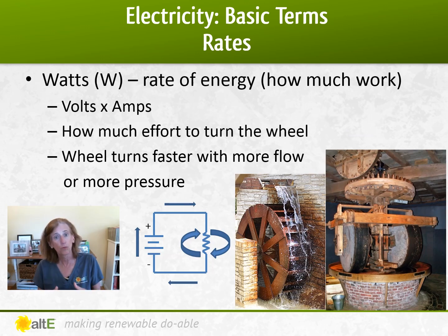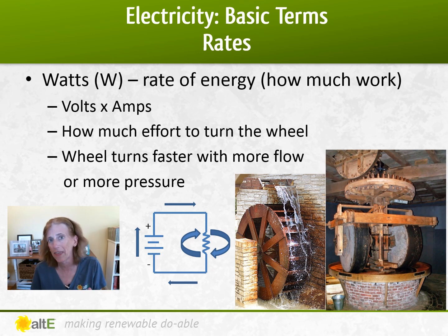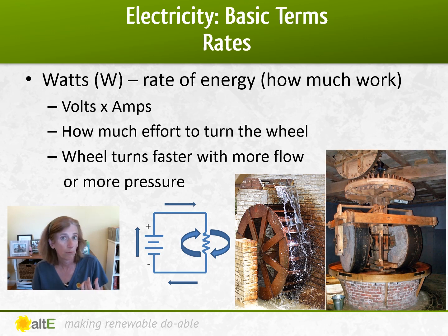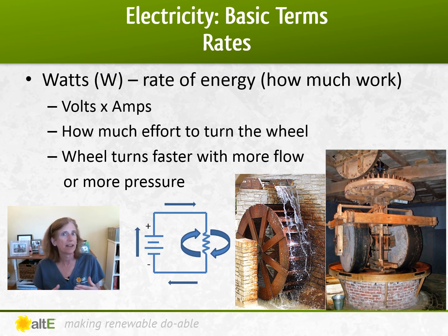Watts is actually a rate of energy — it's how much work. It's the combination of volts and amps: volts times amps equals watts. So how much effort did it take for that water to turn a water wheel? If you have either higher pressure or higher flow, you'll make it spin faster. Same with electricity — if you have higher voltage or higher amps, you're going to have higher watts and you're going to be able to get more work done, make the fan spin faster or make the light shine brighter.